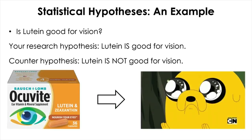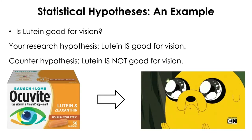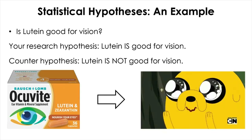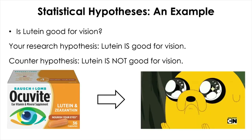Let's consider the following research question: whether or not taking lutein supplement is good for vision. Lutein is a chemical known to be concentrated in the macula, which is responsible for the most accurate vision in the back of the eye.